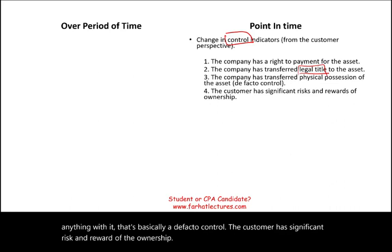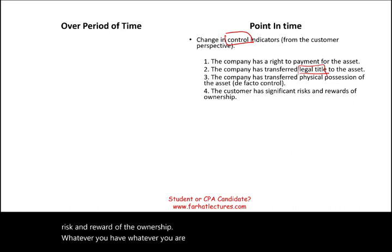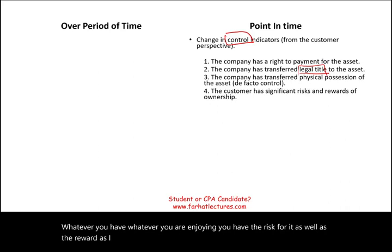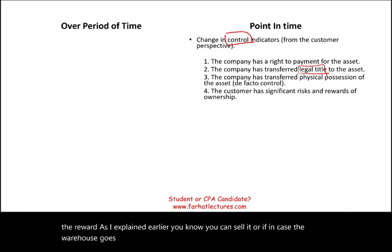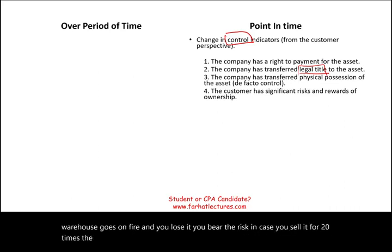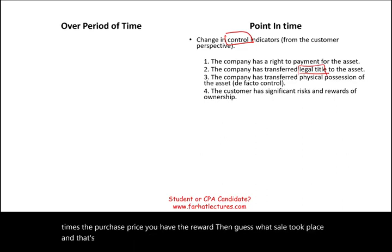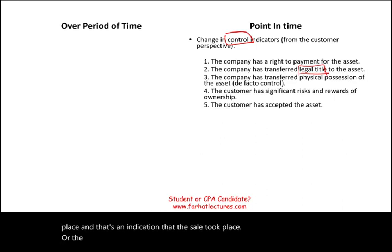Fourth indicator: the customer has significant risk and reward of ownership. Whatever you enjoy, you also bear the risk for. If the warehouse goes on fire and you lose it, you bear the risk; if you sell it for 20 times the purchase price, you have the reward. That's an indication that the sale took place. Fifth indicator: the customer accepted the asset — by accepting the asset, we have a sale.